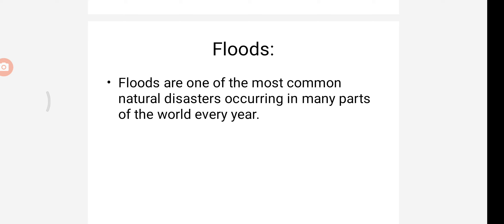Floods in mountainous regions due to cloudbursts or damming of streams are referred to as flash floods. In flash floods, the water drains away quickly but only after causing extensive damage. The plain areas of a region which are drained by a number of rivers are the places most affected by floods. In India, states like Assam, Bihar and parts of Uttar Pradesh are quite prone to floods during the rainy season, along the Ganga and Brahmaputra rivers.